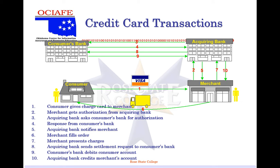What's going to happen is the consumer goes up to the register, they ring it up, the merchant charges it, goes to the acquiring bank, who then sends it to the consumer's bank, which sends back the authorization code to the acquiring bank, who then sends it back to the merchant saying yes, you're good. They give the goods to the consumer. At the end of the day, that merchant sends to the acquiring bank — I want my money — and it flows back through to the merchant's account.